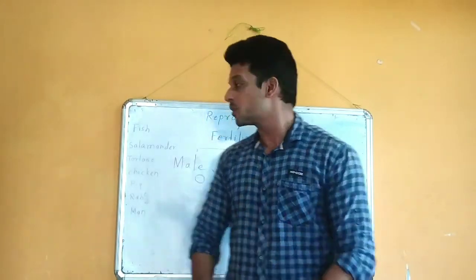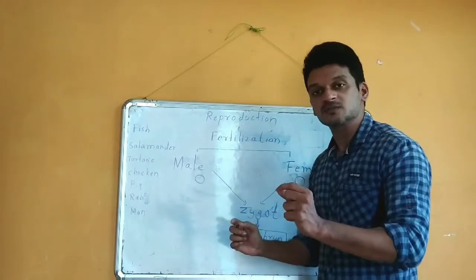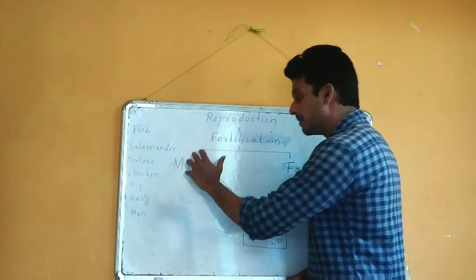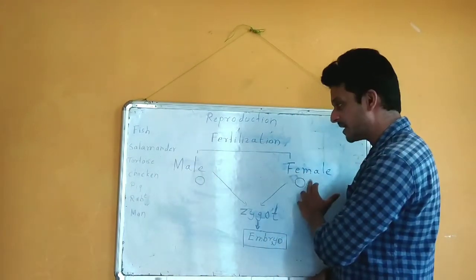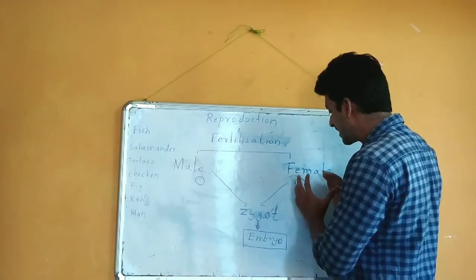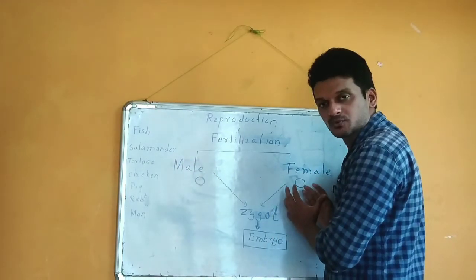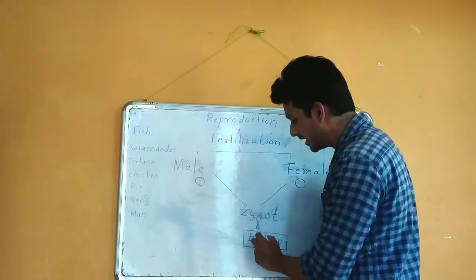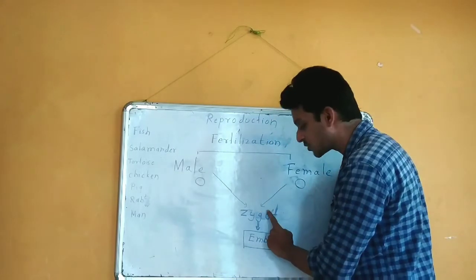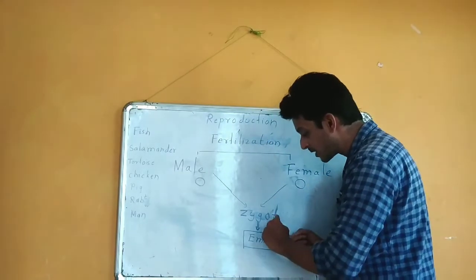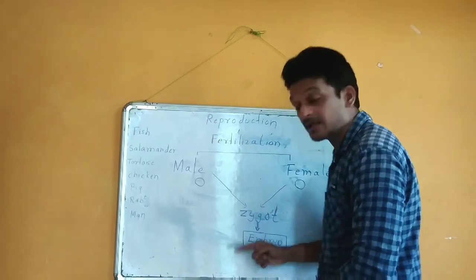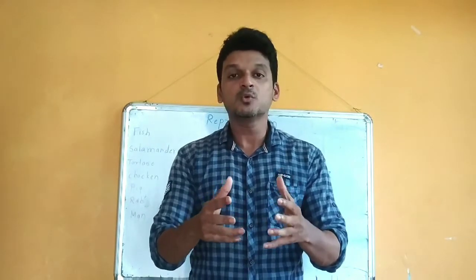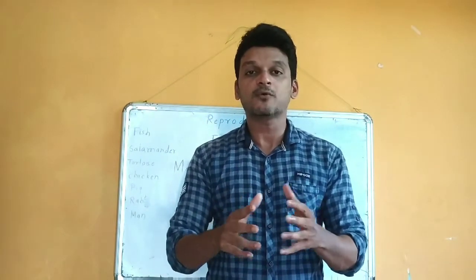Reproduction is the process in which one living thing produces another living thing like itself. In sexual reproduction, fertilization takes place — male gamete and female gamete fuse with each other to produce a single cell called a zygote. This zygote develops into an embryo. An embryo is the first developmental stage in the life of any organism.